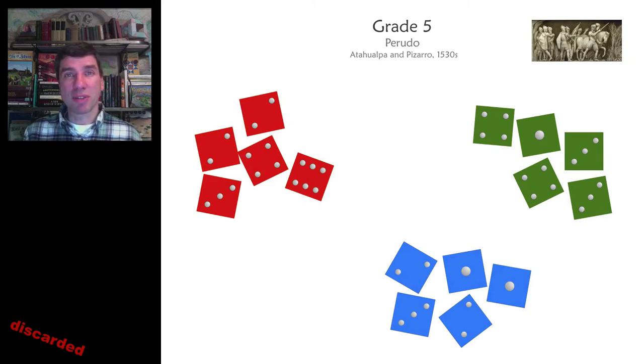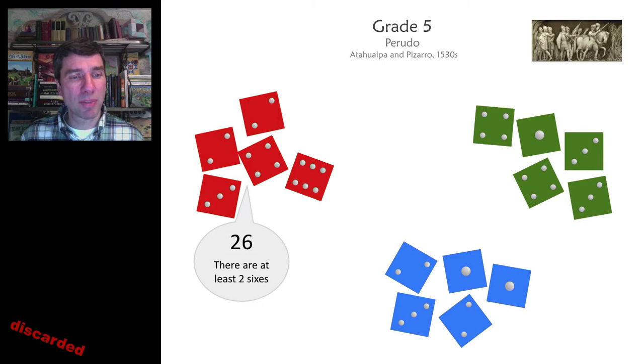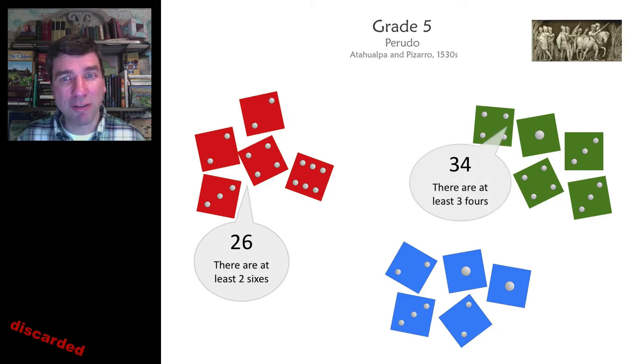Here we have three teams. The dice are rolled secretly. Then red is going to go first here. Red's going to make a bid: 26. That means that there are at least two sixes on the table, according to red. Green has to increase the bid or call bluff. Green does increase the bid to 34. There are at least three fours on the table.